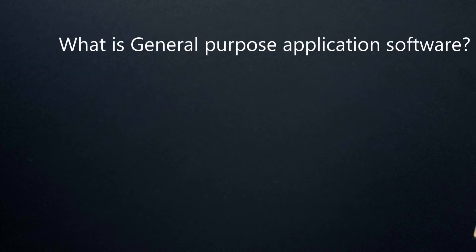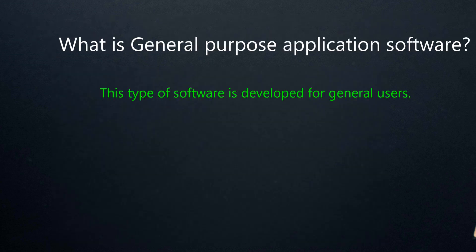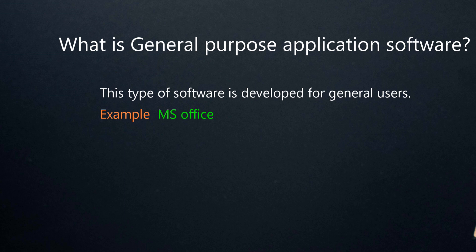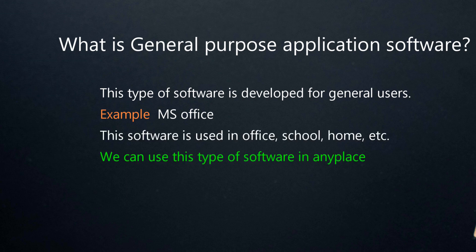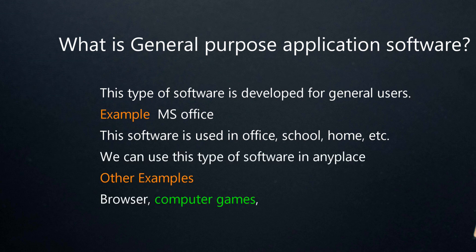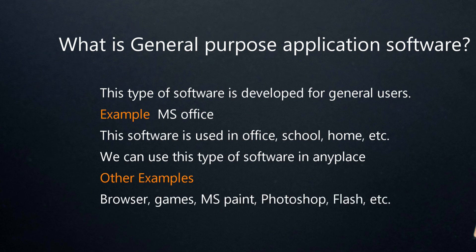What is general purpose software? This type of software is developed for general users. For example, MS Office is a general purpose software which is used in offices, schools, homes, etc. We can use this type of software in any place. Other examples include browser, games, MS Paint, Photoshop, Flash, etc. This type of software is developed for general users and can be used in any place.